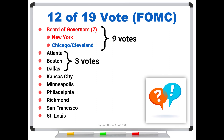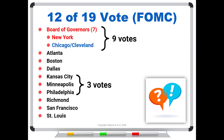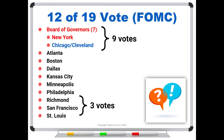So we might see this year Atlanta, Boston, and Dallas cast the other three votes. Then the next year we'd alternate between Cleveland and Chicago, and we might see Kansas City, Minneapolis, and Philadelphia vote. Then the next year we might see Richmond, San Francisco, and St. Louis. So those nine banks rotate every three years, Cleveland and Chicago alternate every year, New York votes every year, and the Board of Governors always votes.